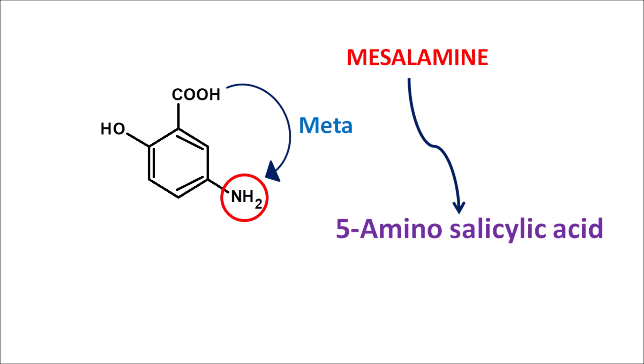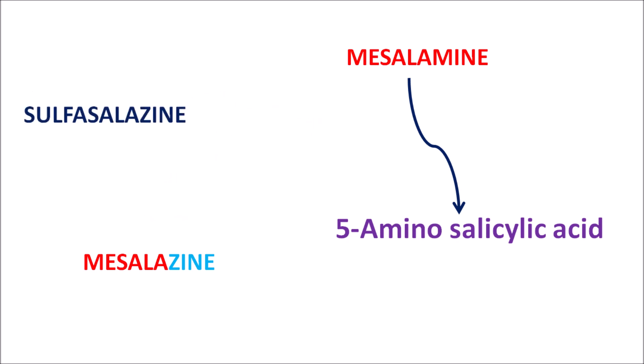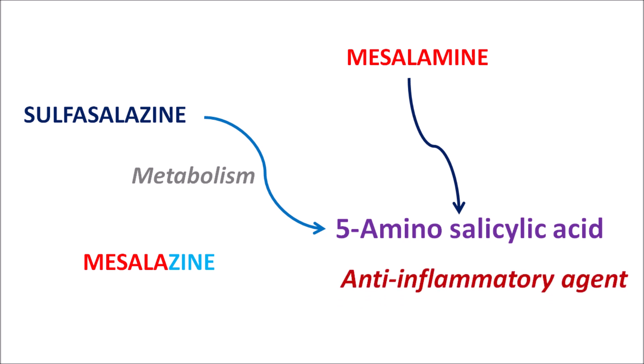This drug is also known by another name, mesalazine. The suffix may be either 'mine' or 'zine'; both indicate 5-aminosalicylic acid. Since salicylic acid derivatives act as anti-inflammatory agents — such as aspirin, which is acetylsalicylic acid — 5-aminosalicylic acid can also act as an anti-inflammatory agent. The drug sulfasalazine is a prodrug of 5-aminosalicylic acid; within the body, sulfasalazine is converted into 5-aminosalicylic acid by metabolism. So just like sulfasalazine, mesalamine is also used as an anti-inflammatory agent.